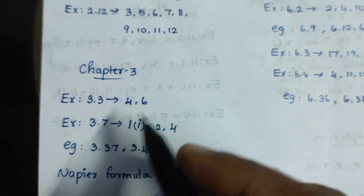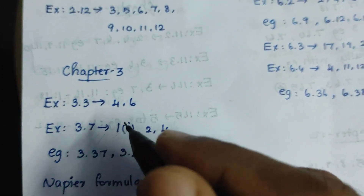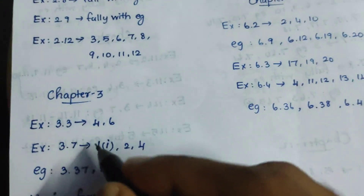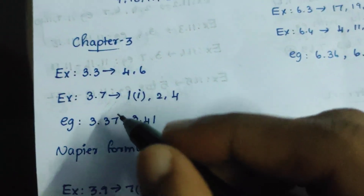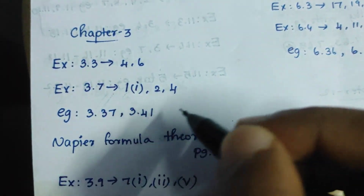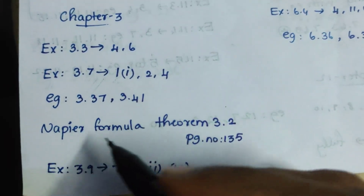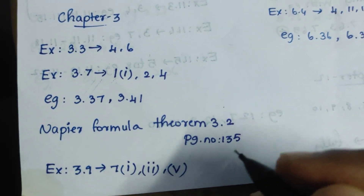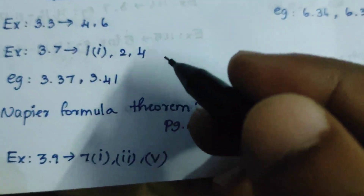Chapter 3, Exercise 3.3: 4, 6. Exercise 3.7: 1st, 2nd, 4th. Exercise 3.37, 3.41. Napier Formula 3.2, page 135.